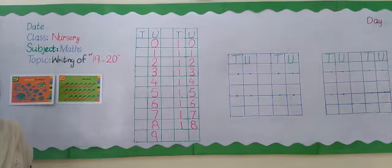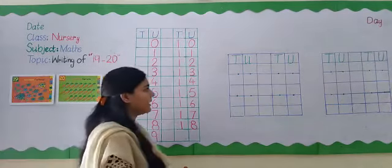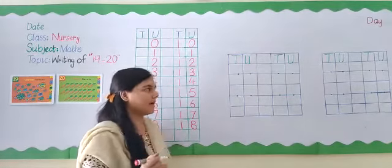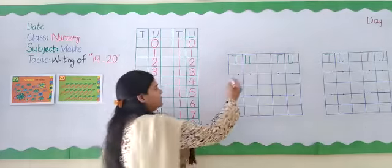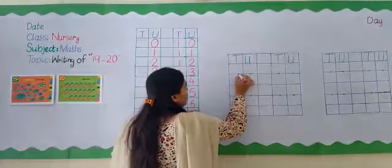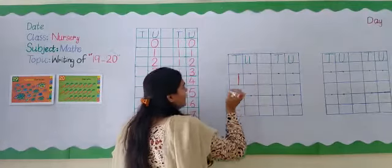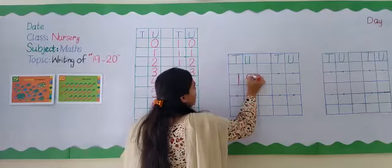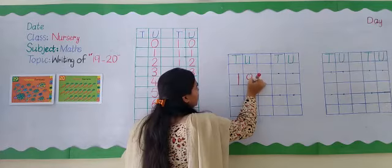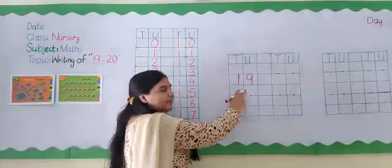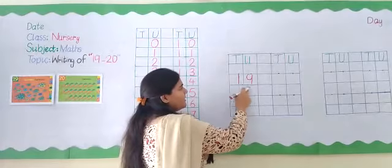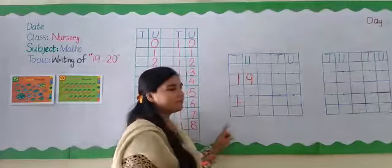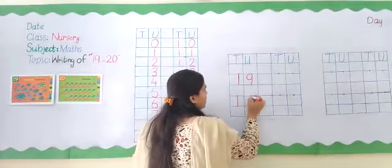So students, first we will write number 19. How do we write 19? You have written number 1 and you know how to write 9. So 1, 9 makes 19. Go down and down. What do we write? 1. Make a curve C. Go up, come down and down. 9. What do we write? 9. 1, 9 makes 19.